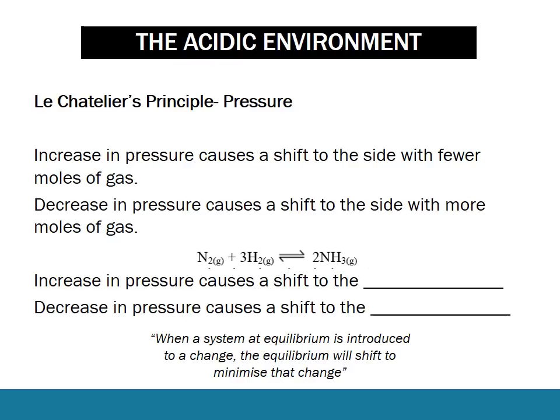Pressure has to do with gases and only gases. An increase in pressure causes a shift to the side with fewer moles of gases. A decrease in pressure causes a shift to the side with more moles of gases. This is because all gases occupy the same volume, so if you increase the pressure, the system will want to occupy the least amount of volume, shifting to the side with the fewest moles of gas. Taking the Haber process as an example, the right-hand side has fewer moles of gas, so an increase in pressure will cause a shift to the right, and a decrease in pressure will cause a shift to the left.